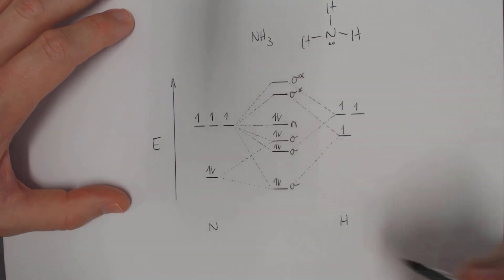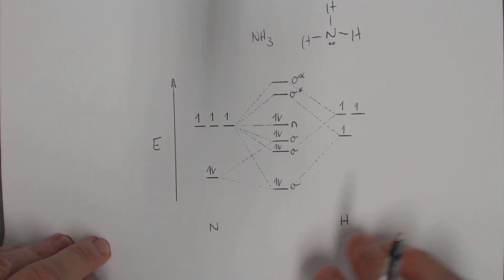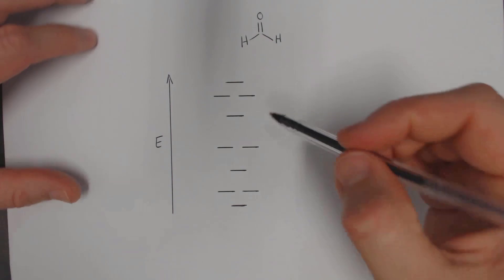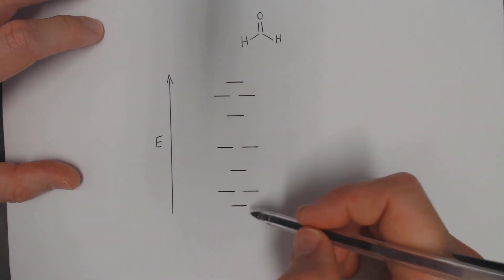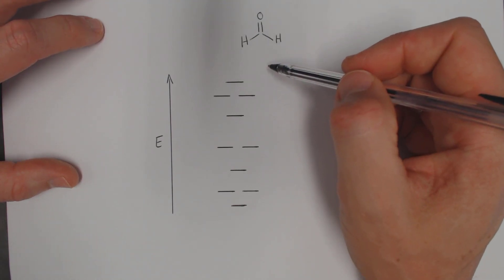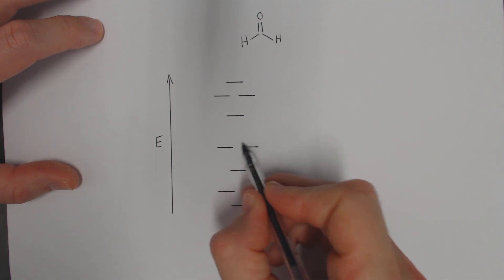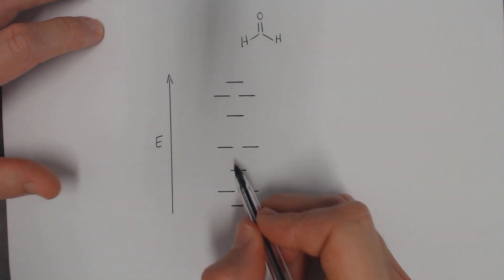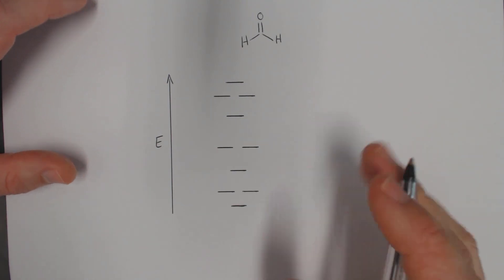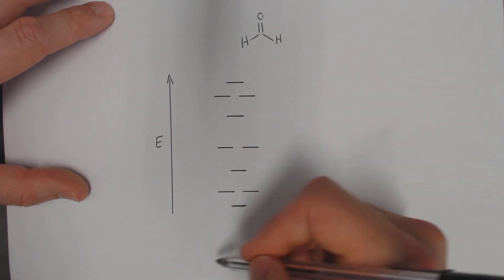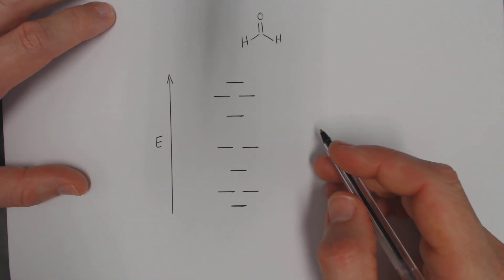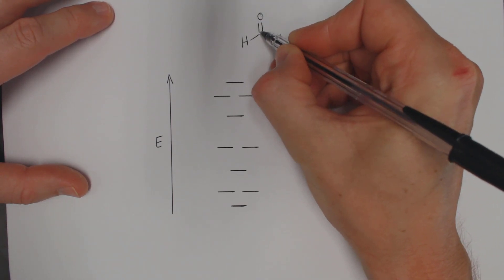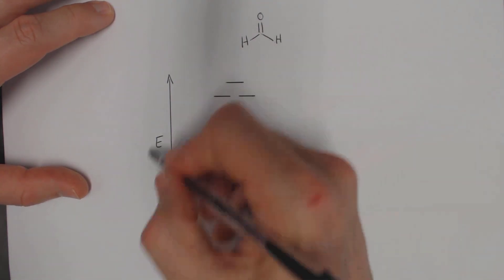Now let's look at formaldehyde. This is a simplified example of energy levels for all the molecular orbitals of formaldehyde. Some orbitals are drawn at the same energy level for simplicity — they're not truly identical, but they're close enough to make the diagram easier to understand. Formaldehyde has carbon-hydrogen, carbon-hydrogen, and carbon-oxygen sigma bonds, plus a carbon-oxygen pi bond.